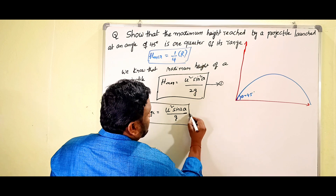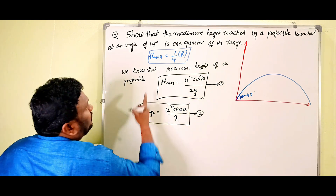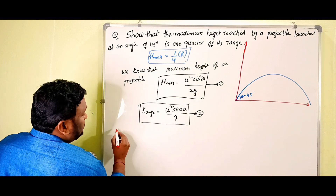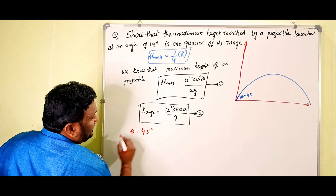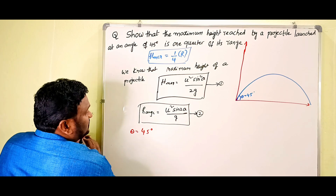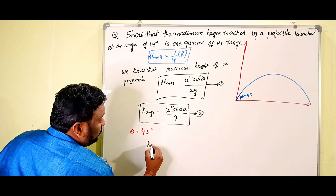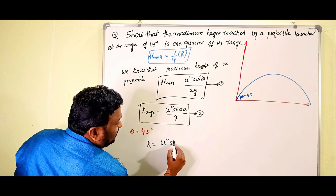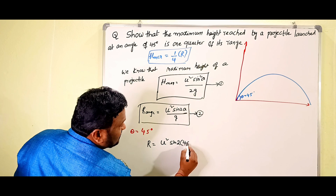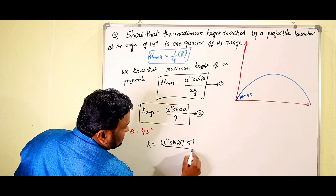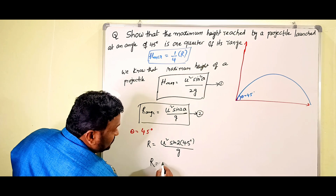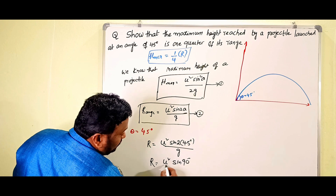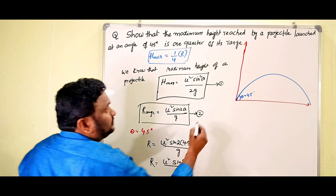Here, the angle of projection given is θ = 45 degrees. Substituting into the range formula, equation (2): R = u² sin(2 × 45°) / g = u² sin(90°) / g.